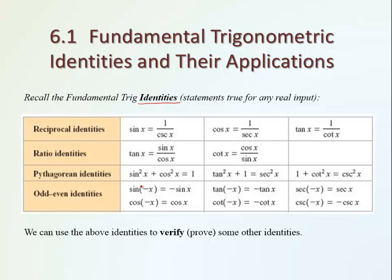In this table we have a list of identities that we already have seen. In the first row we have reciprocal identities. Those identities come directly from the definition of cosecant, secant, or cotangent. The second row reminds us about ratio identities. From the definition we showed that tangent x is the same as sine over cosine, and since cotangent is the reciprocal of tangent, it's cosine over sine.